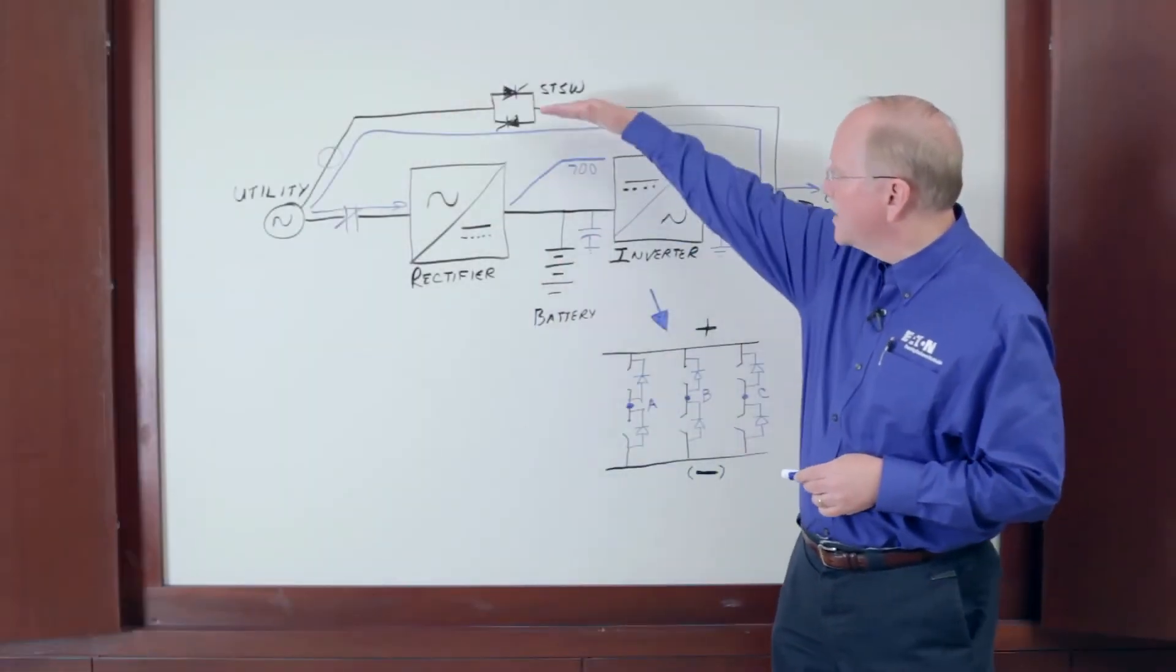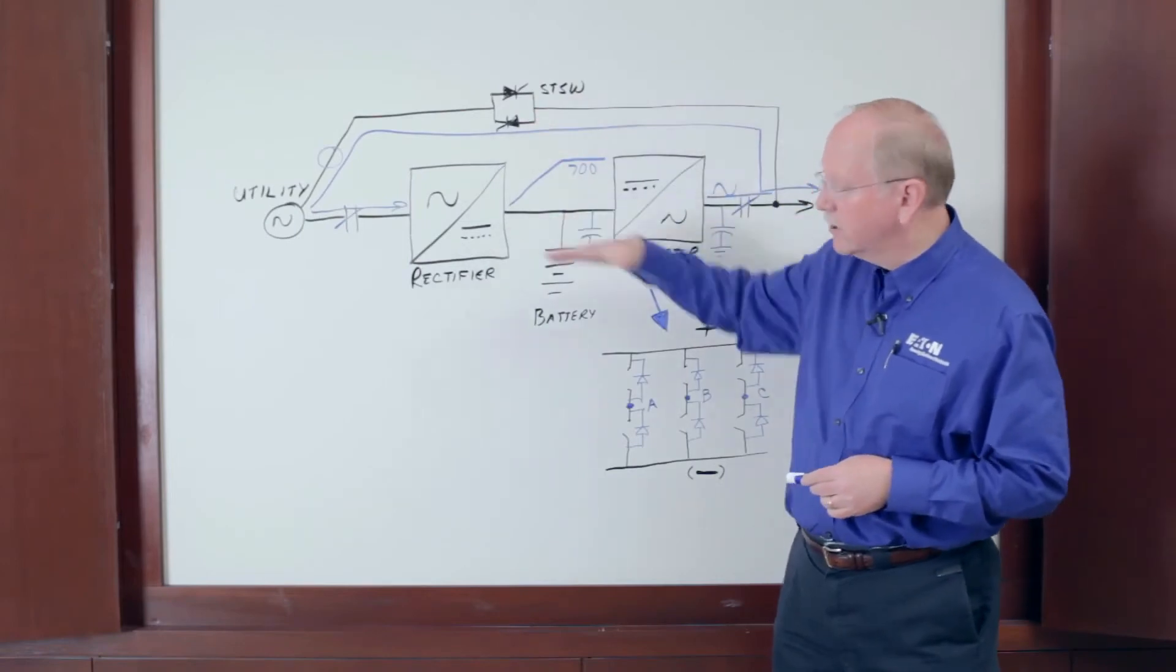So if you're considering using eco mode on your UPS, there's three criteria that should be important. The first one is transition time. The time it takes from static switch operation to traditional double conversion should be less than four milliseconds, ideally less than two milliseconds or two 1,000th of a second.